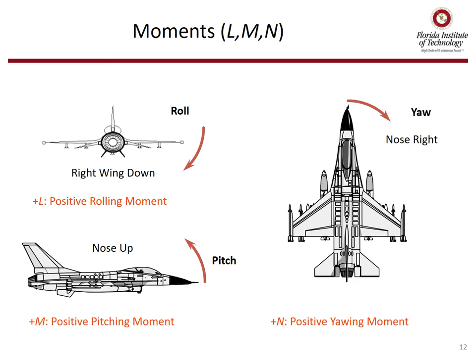Next, we'll define moments. Rolling moment is given the symbol L. An aircraft rolls about the x-body axis, and using the right-hand rule, positive roll moment is shown in the figure. Pitching moment is given the symbol M — that's the moment about the y-body axis. Using the right-hand rule, a positive pitching moment is nose up. Yawing moment is given the symbol N — it's motion about the z-body axis, and a positive yawing moment is nose right.